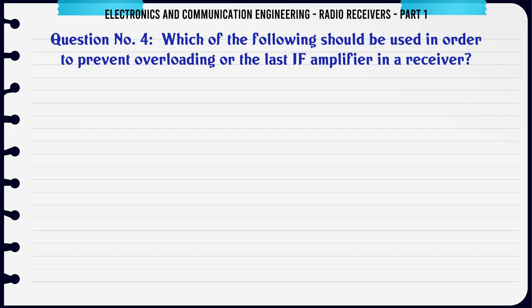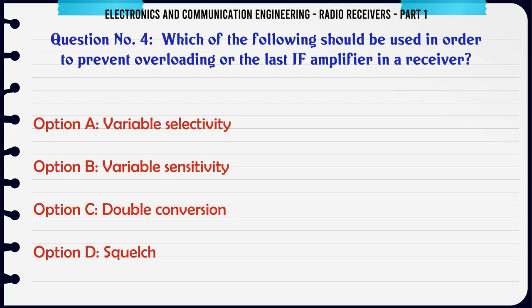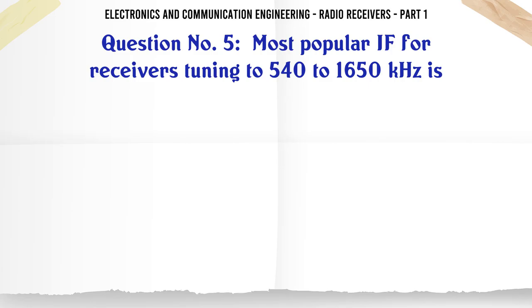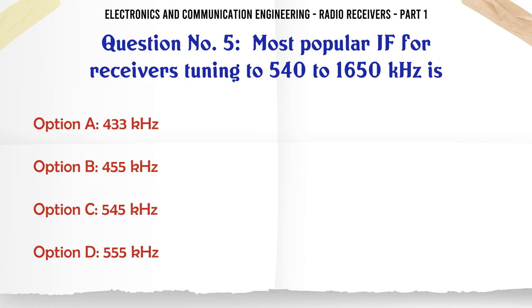Which of the following should be used in order to prevent overloading of the last IF amplifier in a receiver? a. Variable selectivity. b. Variable sensitivity. c. Double conversion. d. Squelch. The correct answer is variable sensitivity.